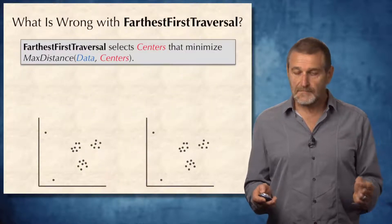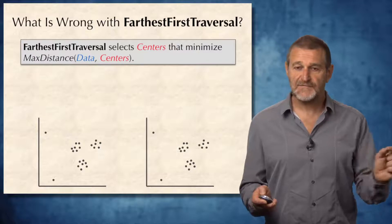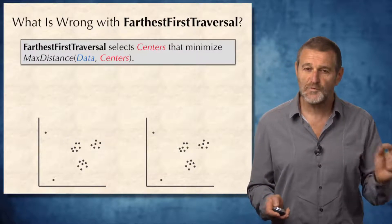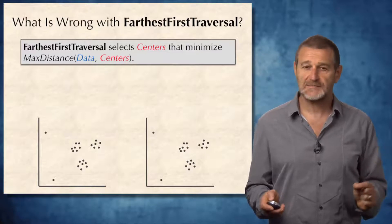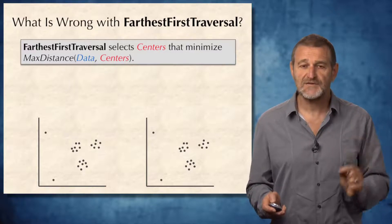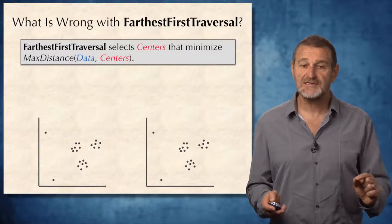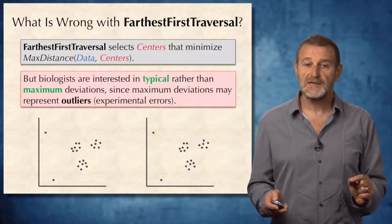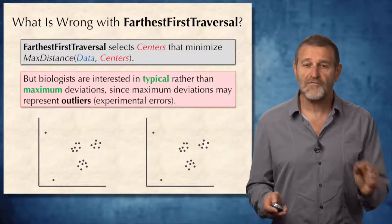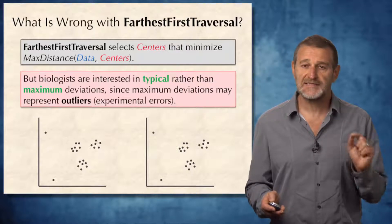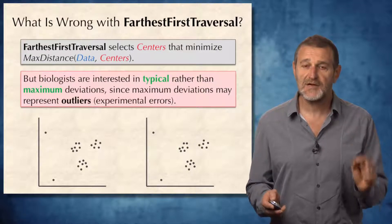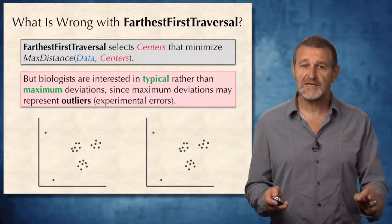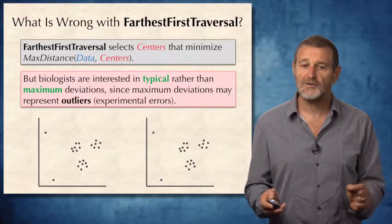Now, after designing the farthest-first traversal algorithm, let's ask what is wrong with it in practice. The farthest-first traversal selects centers that minimize maximum distance. But biologists are often interested in typical rather than maximal distances, because maximum distances often represent experimental errors or outliers.